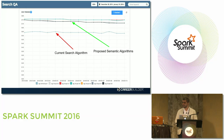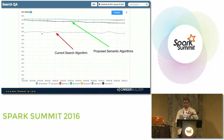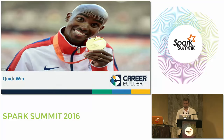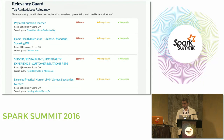Our current keyword-based search engine has a relevancy score of about 59%. Our proposed semantic search engine estimates a relevancy score of around 76%, according to our fully automated QA system.